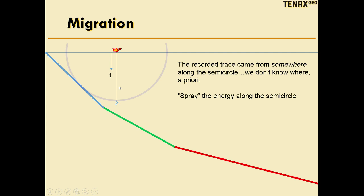What we know, all we know from the seismic experiment, the recorded trace, is that energy came from somewhere in the subsurface, and in fact, in a constant velocity Earth at least, somewhere along a semicircle.